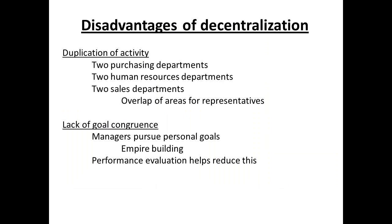There can be disadvantages to decentralization. A large number of small units could produce duplication of activities. Large businesses will try and avoid ending up with separate purchasing, sales, and human resources departments for each unit. A second problem that can arise is due to what is known as empire building, where managers pursue their own goals, and these can differ from the interests of the company. This is referred to as lack of goal congruence, and is a major argument for carrying out performance evaluation.